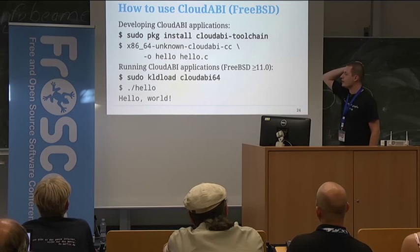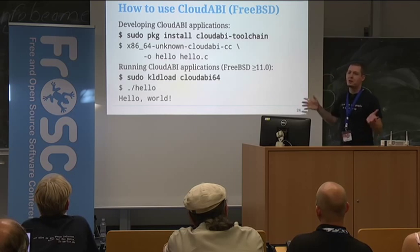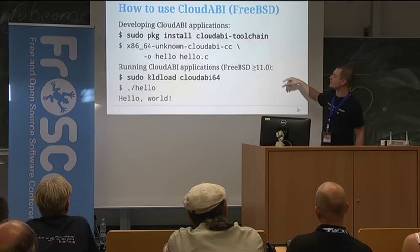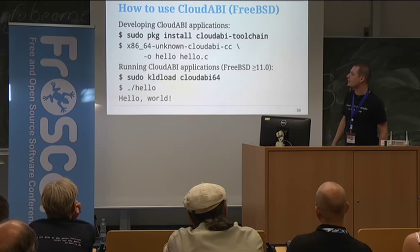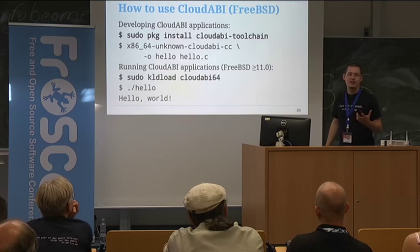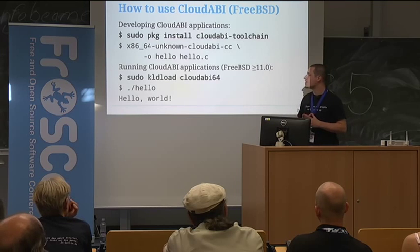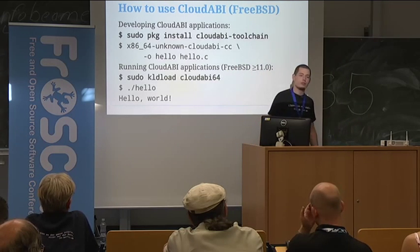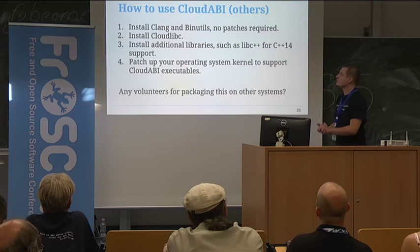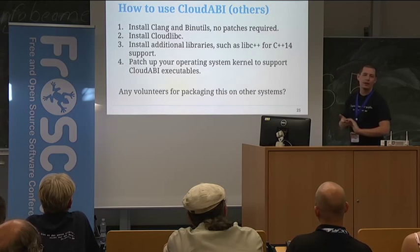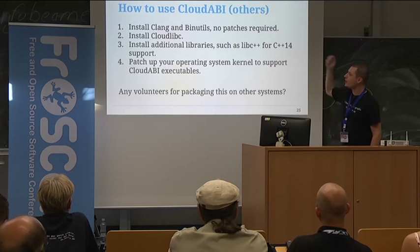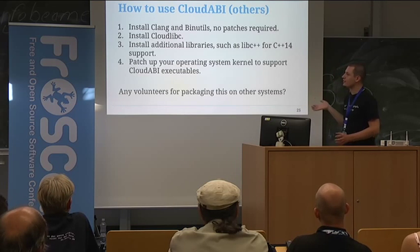I managed to upstream Cloud ABI support into FreeBSD one and a half weeks ago. If you happen to have a FreeBSD system running the latest developer snapshots, you can run two commands: one to install a complete Cloud ABI toolchain — which includes a compiler, a linker, a standard C library, and a C++ library — and then you can use that to compile C and C++ programs. It also includes a kernel module that you can load, and if you load this kernel module you can just execute Cloud ABI processes just like regular Unix processes. For other operating systems it's a bit more complicated because I don't have any packages yet, so first you'd have to install Clang and binutils manually.